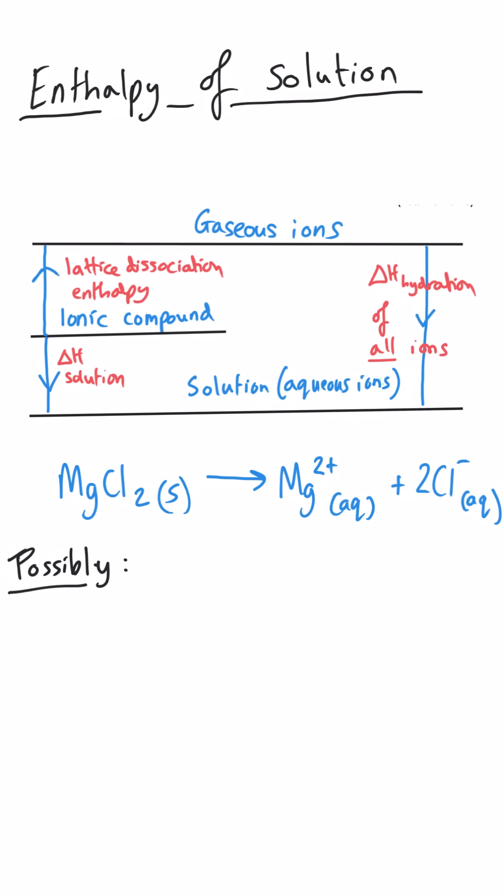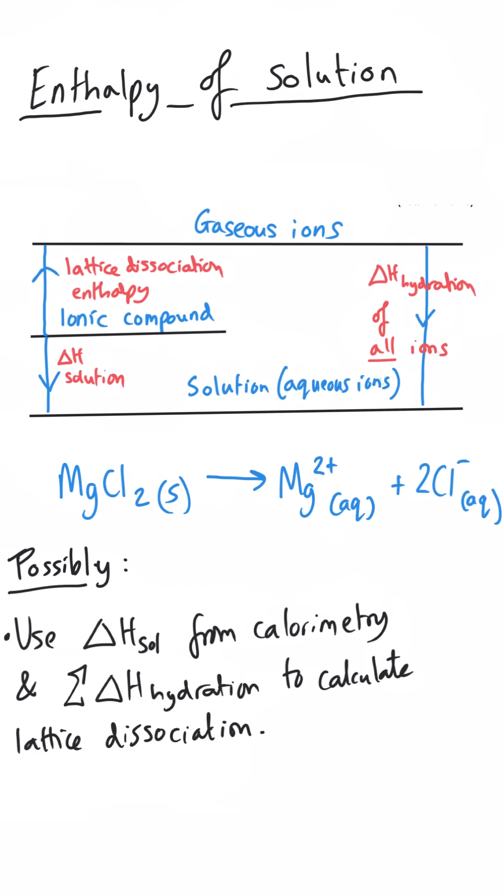And then what they might get you to do is to either use your enthalpy of solution that you've calculated and some enthalpy of hydration data to work out the lattice dissociation enthalpy. So you use this very much like a Hess cycle, where if we start here and move up to the top, that is equal to the enthalpy of lattice dissociation. But we could follow that alternative route, moving down this arrow, so in the same direction as this arrow, and then moving the wrong way up this arrow, and we finish in the same position these gaseous ions. So the lattice dissociation enthalpy in this instance is enthalpy of solution minus the sum of all those hydration enthalpies. That's one thing they could get you to do with your calculated enthalpy of solution value for, say, magnesium chloride.